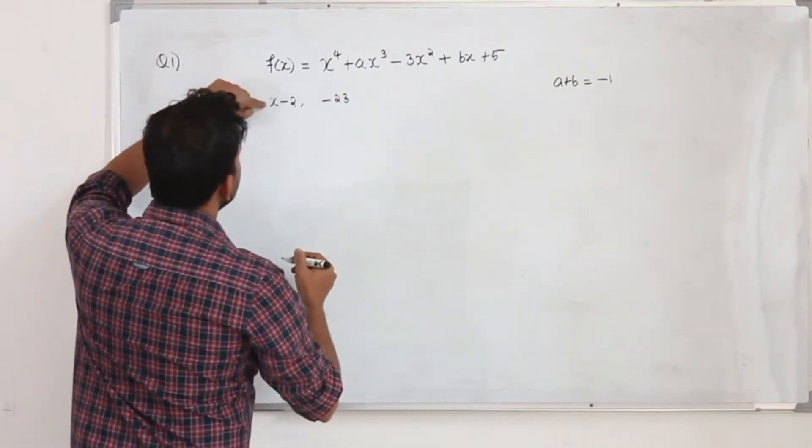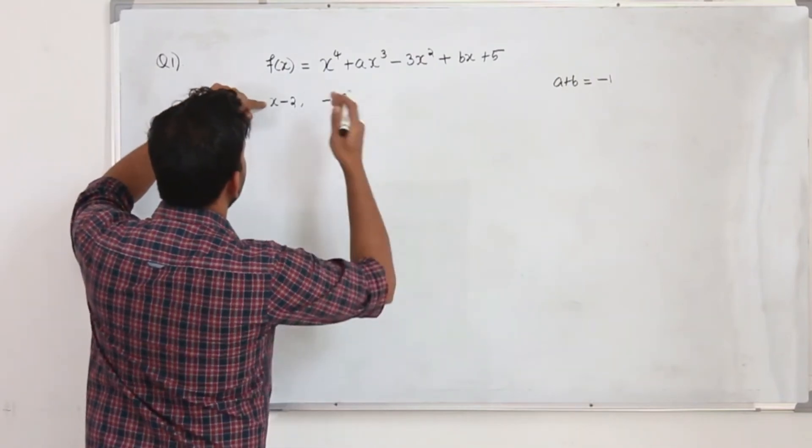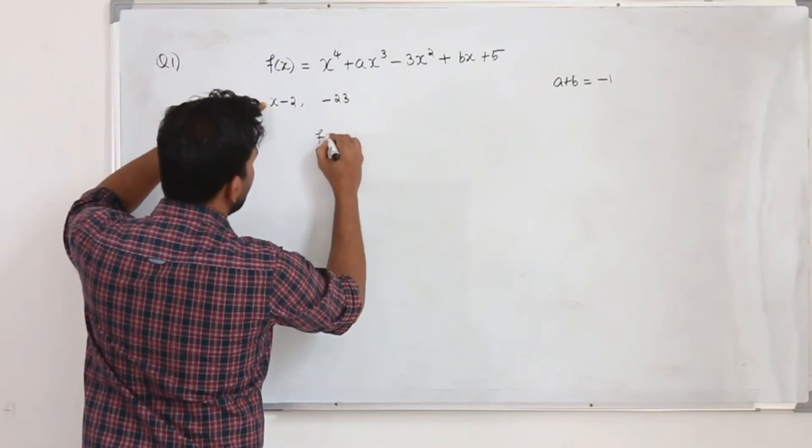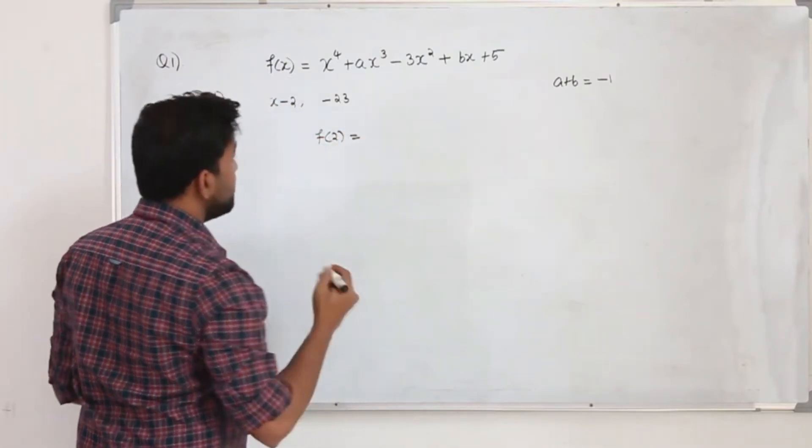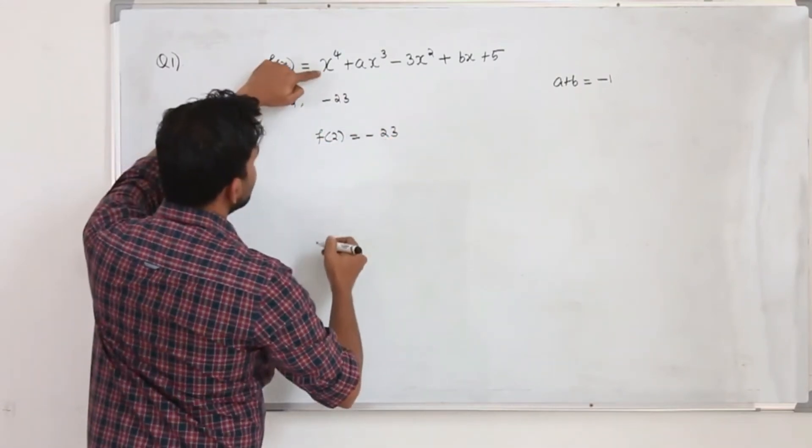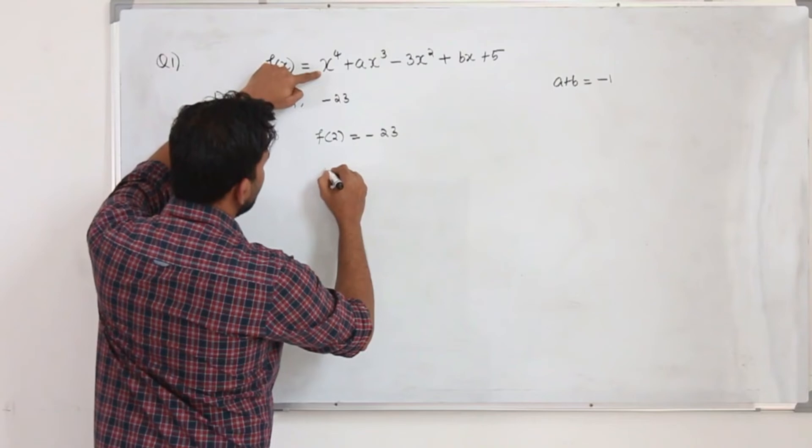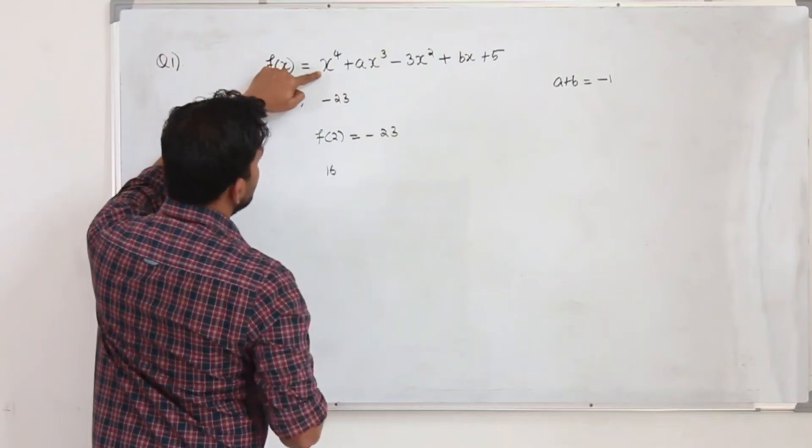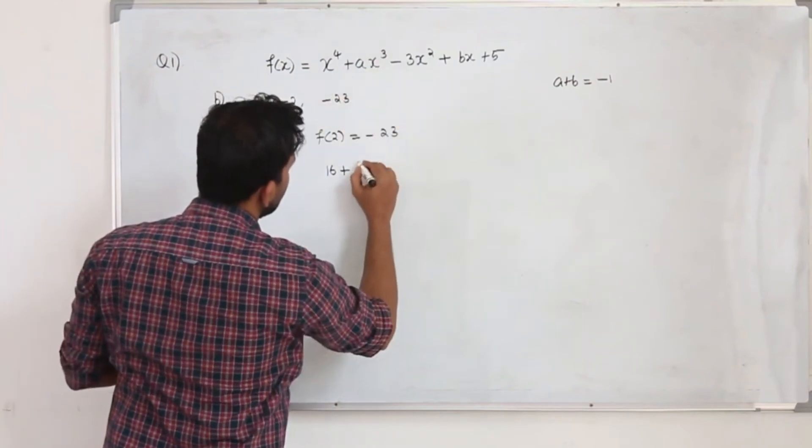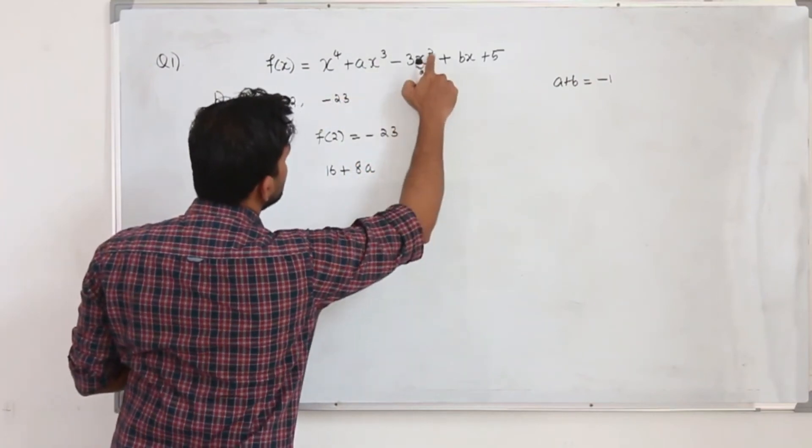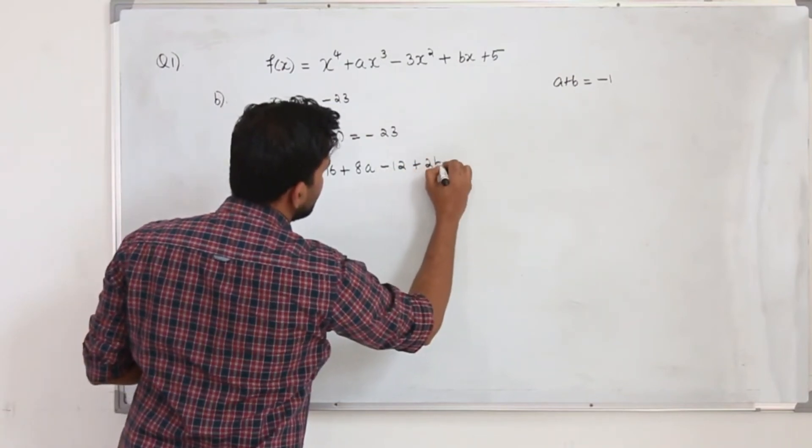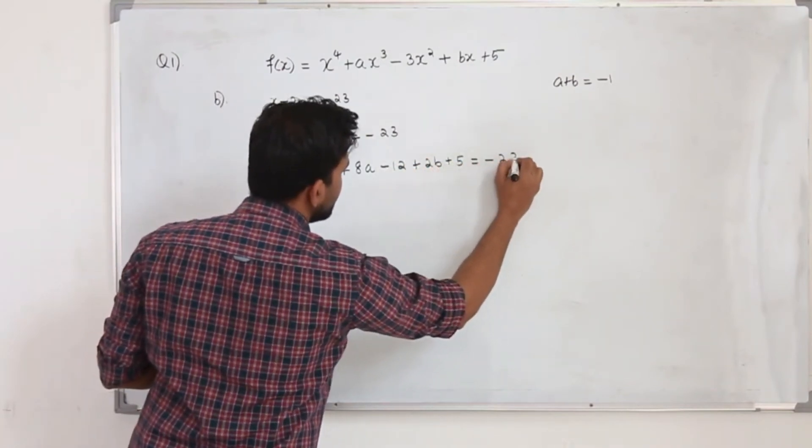So if f of x is divided by x minus 2, replace x by 2 here. So f of 2 will give you the remainder minus 23. So replace x by 2 here, 2 to the power 4, which is 16. Plus 2 cube times a is 8a, 2 square is 4, 4 times 3 is 12, 2 times b, plus 5 equals minus 23.